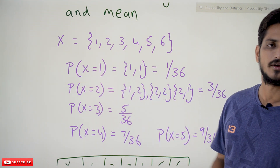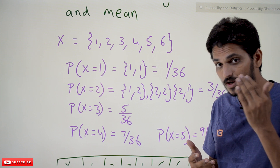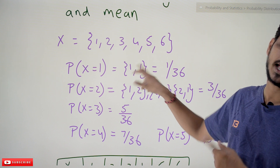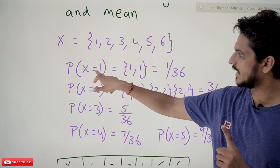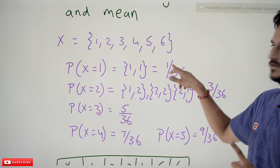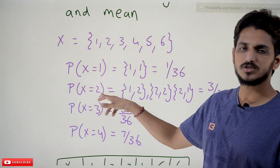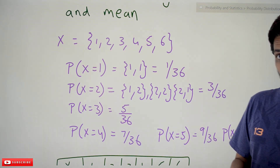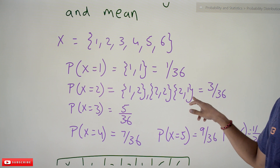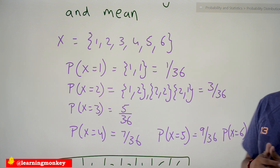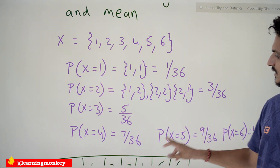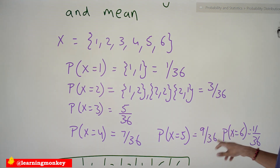Probability of X equal to one: only (1,1) gives a maximum of one, so probability is 1/36. Probability of X equal to two: outcomes (1,2), (2,2), (2,1) all give maximum two, so probability is 3/36. Similarly, probability of X equal to three is 5/36, X equal to four is 7/36, X equal to five is 9/36, and X equal to six is 11/36.